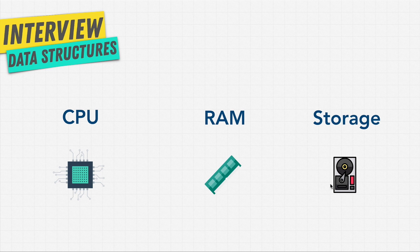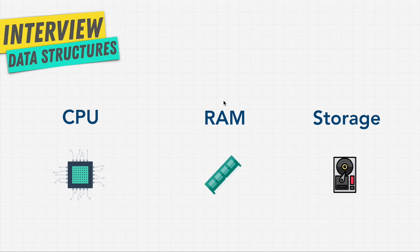On top of RAM we also have storage, where we store things like video files, music files, and documents. Storage can be a disk drive, a flash drive, or a solid state drive. Data on storage is permanent, or what we call persistent — so when you turn off your laptop or computer, it's still going to be there when you turn it back on. In RAM, you lose the memory when the computer turns off.